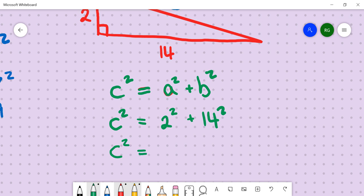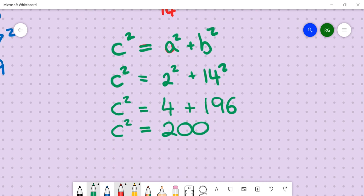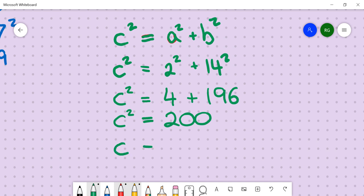A lot of these things just take a bit of repetition. c squared equals 4 plus 196. c squared equals 200. Now, we just need to work out what the square root of 200 is. So use your calculator.